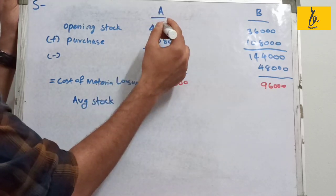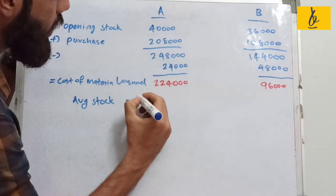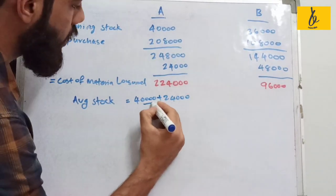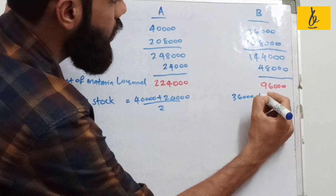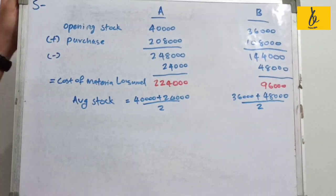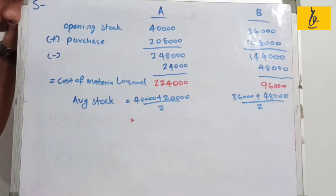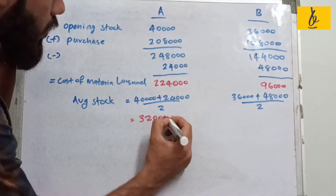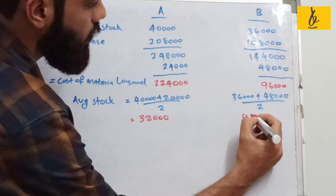For average stock, opening stock for Material A is 40,000 and closing stock is 24,000, so average stock is (40,000 + 24,000) / 2 = 32,000. For Material B, average stock is (36,000 + 48,000) / 2.